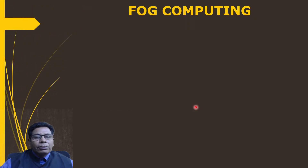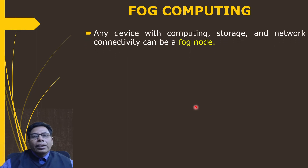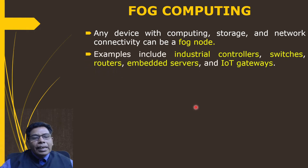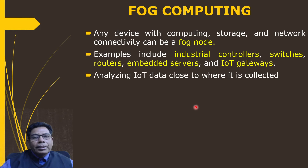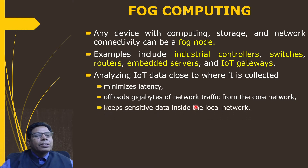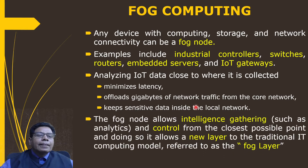Any device with computing, storage, and network connectivity can be a fog node. Examples include industrial controllers, switches, routers, embedded servers, and IoT gateways. Analyzing IoT data close to where it is collected minimizes latency, offloads gigabytes of network traffic from the core network, and keeps sensitive data inside the local node, thereby enhancing security. The fog node allows intelligence gathering — analytics and control — at the closest possible point, adding a new layer to the traditional IT computing model called the fog layer.